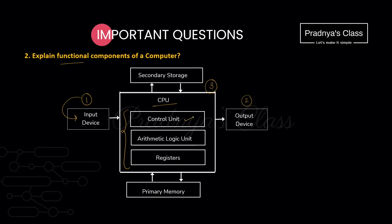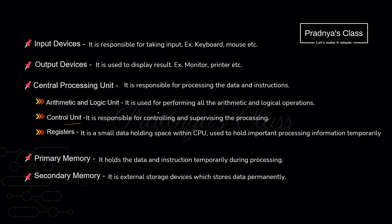The first unit is the control unit, the second is the ALU, and the third is registers. The control unit is used for controlling and supervising the processing of the computer. The arithmetic and logic unit (ALU) is responsible for carrying out arithmetic and logical operations. The register is just like memory — it is used to hold important data during processing.